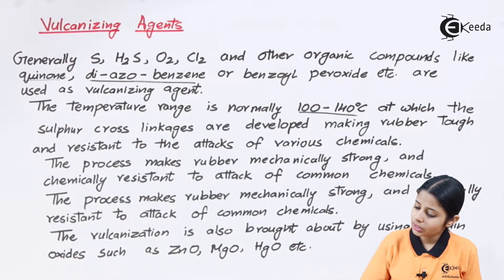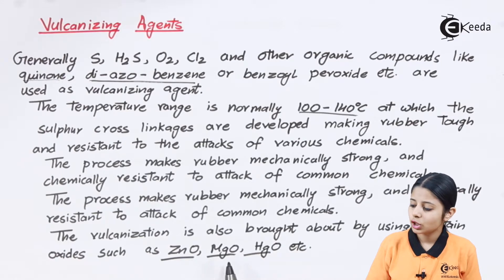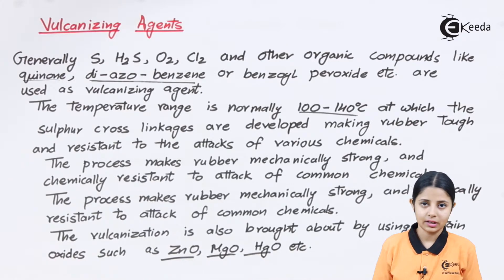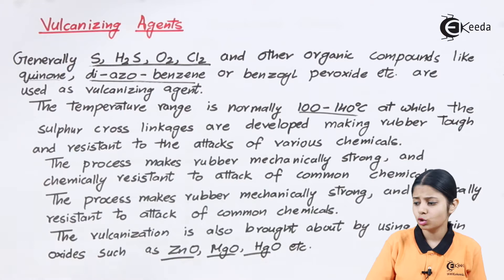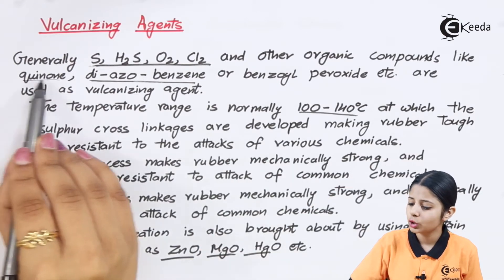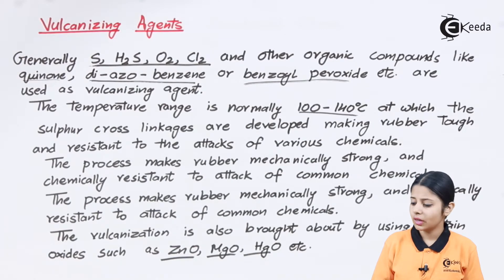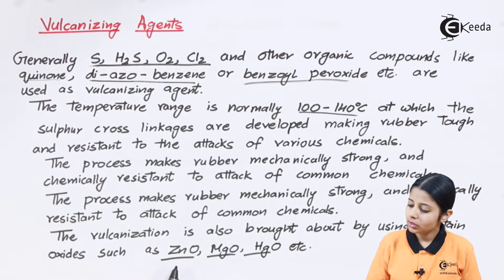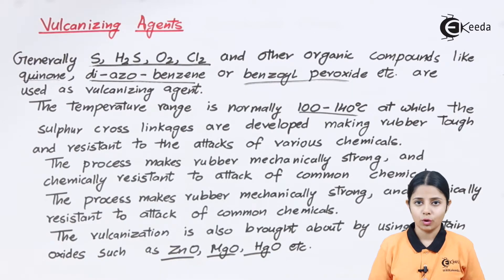Vulcanization can also be brought about using certain oxides such as ZnO (zinc oxide), MgO (magnesium oxide), and HgO (mercuric oxide). So we can use inorganic agents like sulfur, H2S, O2, and Cl2; or organic agents such as quinone, diazobenzene, and benzoyl peroxide; or these metal oxides — zinc oxide, magnesium oxide, and mercury oxide. Let us now look at the reactions to get a better understanding.